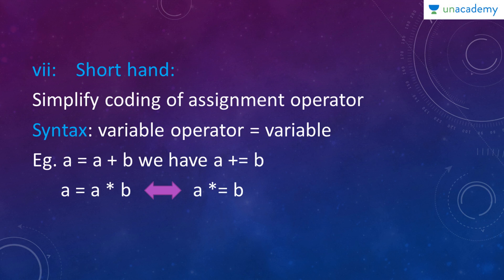Next type of operator is a shorthand operator. It is used to simplify coding of assignment operator. The syntax is variable operator equal to variable. Let us see an example. Instead of writing a equals to a plus b you can write it as a plus equal to b because both are equivalent. Similarly instead of writing a equals to a into b we can write it as a into equal to b. Both perform the same operation. Hence it is called as shorthand operator.